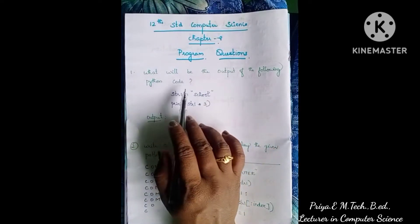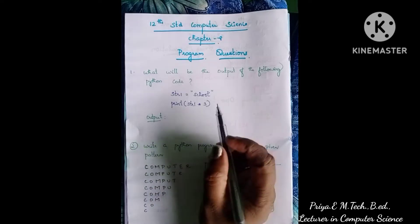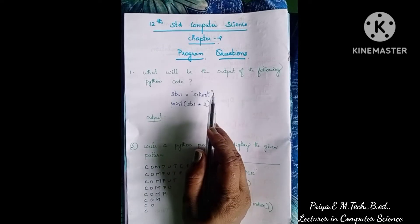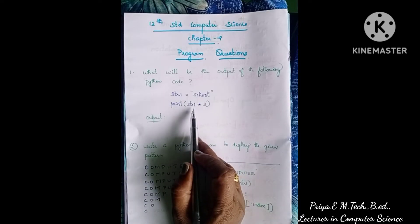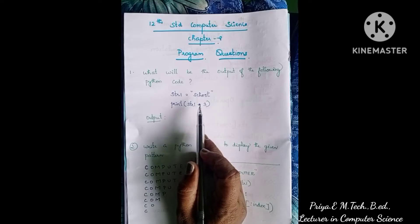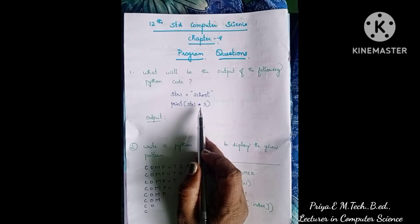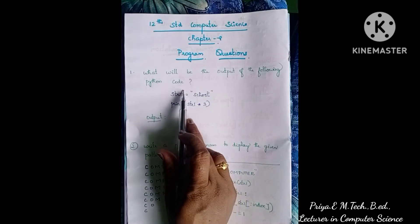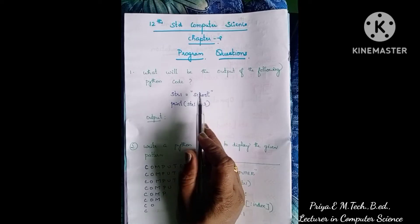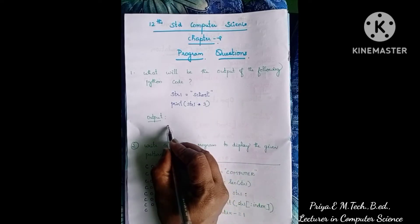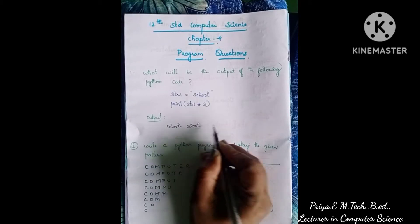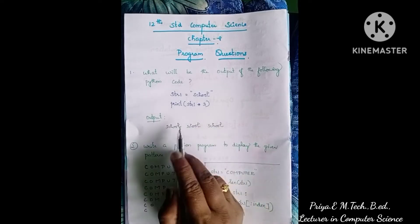What will be the output of the following Python code? This is a two-mark question. str1 is equal to 'school' — this is a string enclosed with double quotes. str1 multiplied by 3 — this is the string repetition operator, which repeats the string three times. So the output will be: school school school, printed three times.